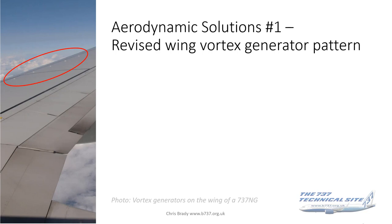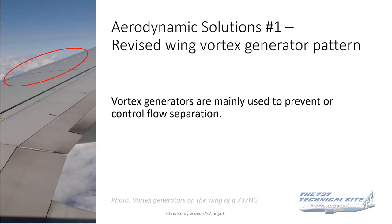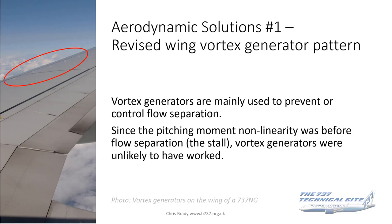Here are some theories why these solutions didn't quite work. Looking at the wing vortex generators — these are present on the NG, Classic, and originals, mainly used to prevent or control flow separation. But the pitching moment non-linearity was occurring before flow separation, before the actual stall. So vortex generators were unlikely to have worked.